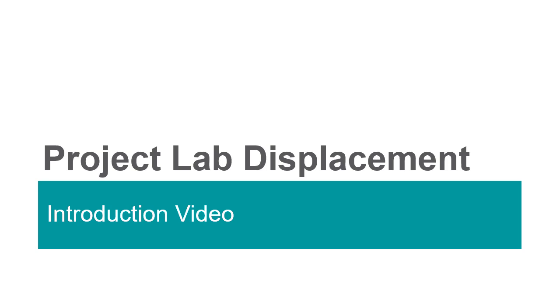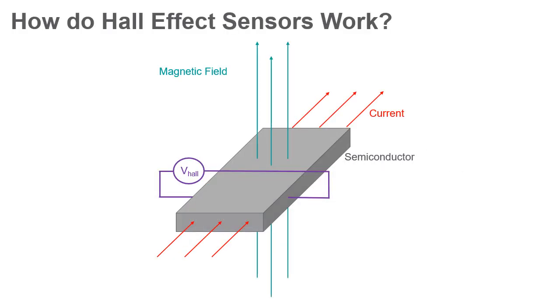How do Hall effect sensors work? Hall effect sensors are based on the Hall effect, where current flowing through a semiconductor, placed perpendicular to a magnetic field, will generate a voltage potential across the semiconductor material.